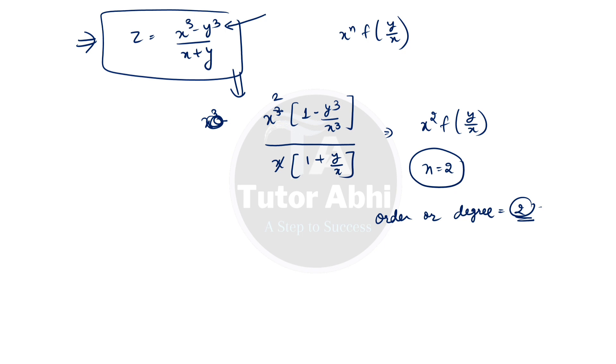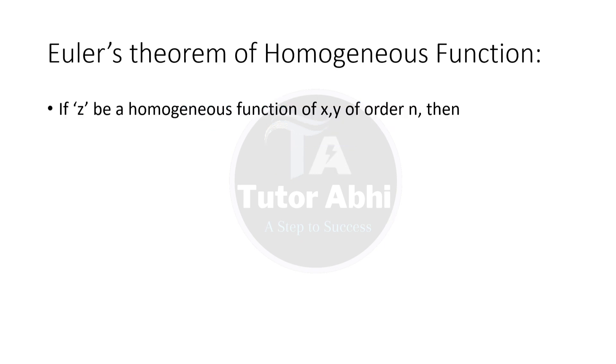There's one more concept called Euler's theorem of homogeneous function. It says that if z be a homogeneous function of x, y of order n, then x partial z upon partial x plus y partial z upon partial y equals n times z.